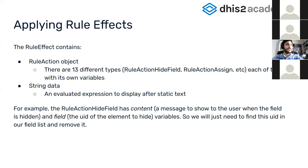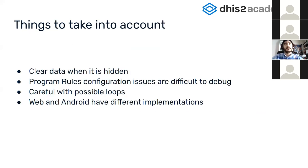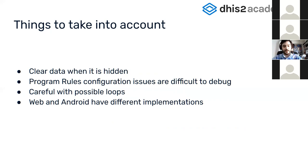Something important to consider when working with the rule engine: you must clear data when a field is hidden. The way we work with the rule engine in the Android app is that each time the user adds data, it is stored locally in the SDK database. If you receive a hide field effect and don't clear that value — don't remove it from the SDK — and then sync, that value will go to the server, which we don't want because the program rule already said that value shouldn't exist.